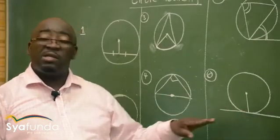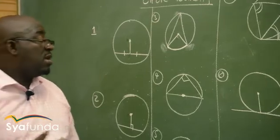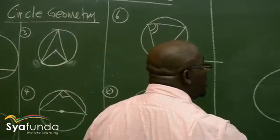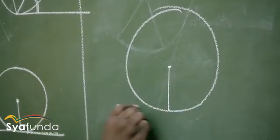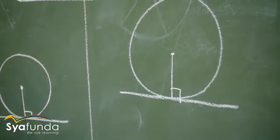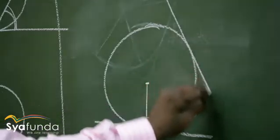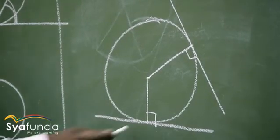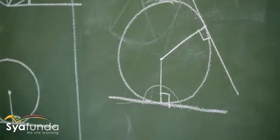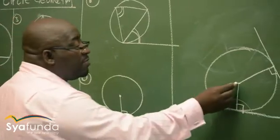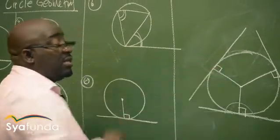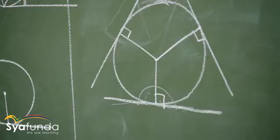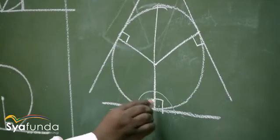Whenever a radius meets a tangent, no matter where it is, as long as one is a radius and the other is a tangent, you will always have 90 degrees. If this is my circle, this is my radius, and this is a tangent, you will always have 90 degrees there. If this is 90 degrees, on the other side it's also 90 degrees. As long as there's a tangent meeting a radius — or even a diameter — you will always have 90 degrees.